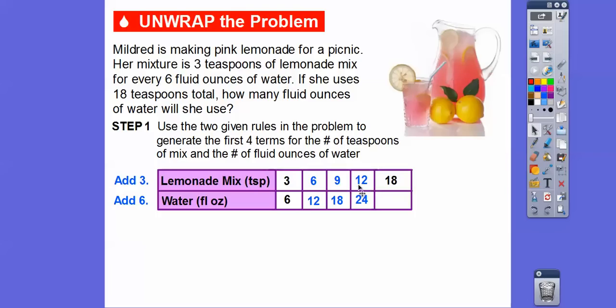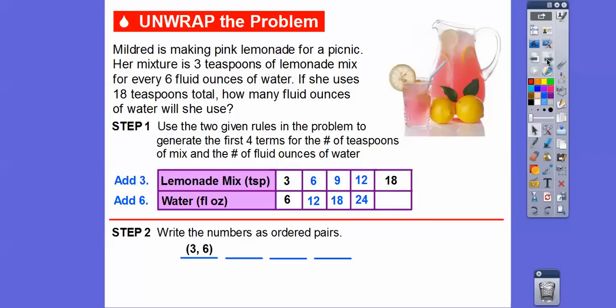We can keep going all the way out to 18. Twelve plus three is 15, and 24 plus six is 30. Then 15 plus three is 18, and 30 plus six is 36. So now we're going to graph these ordered pairs and analyze the graph to discover some relationships.